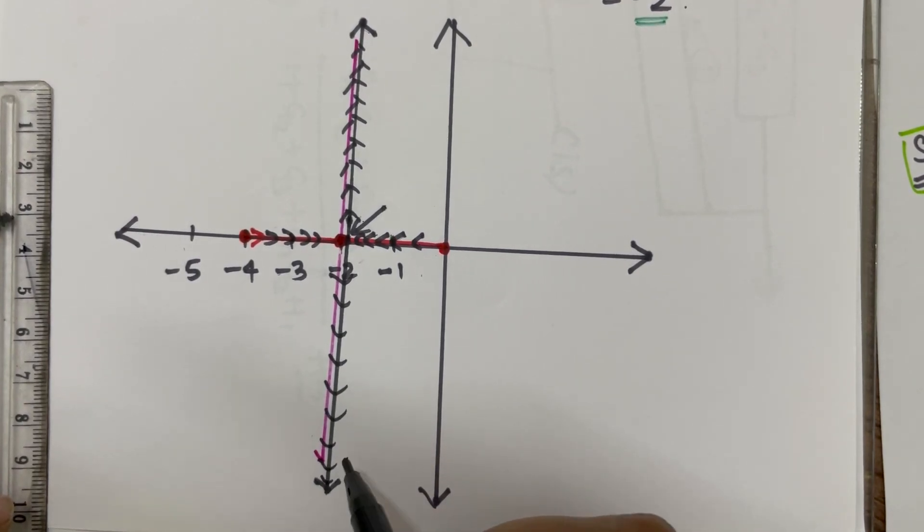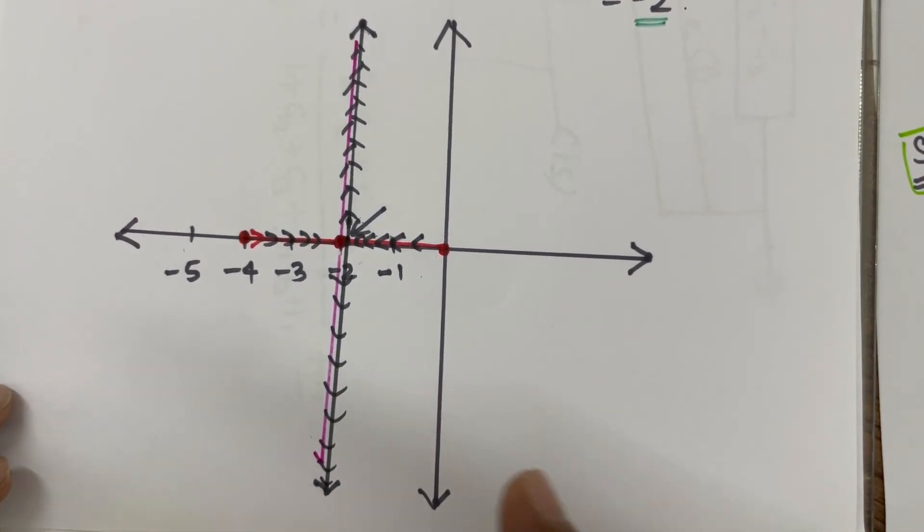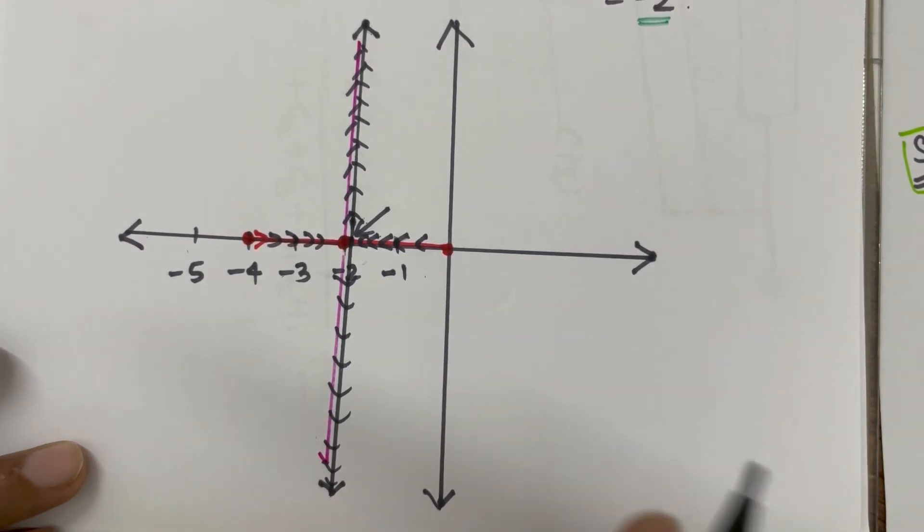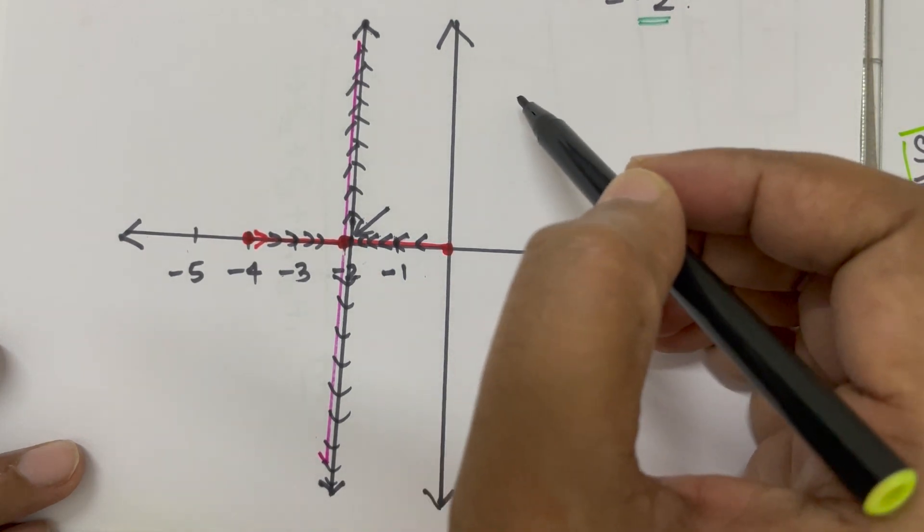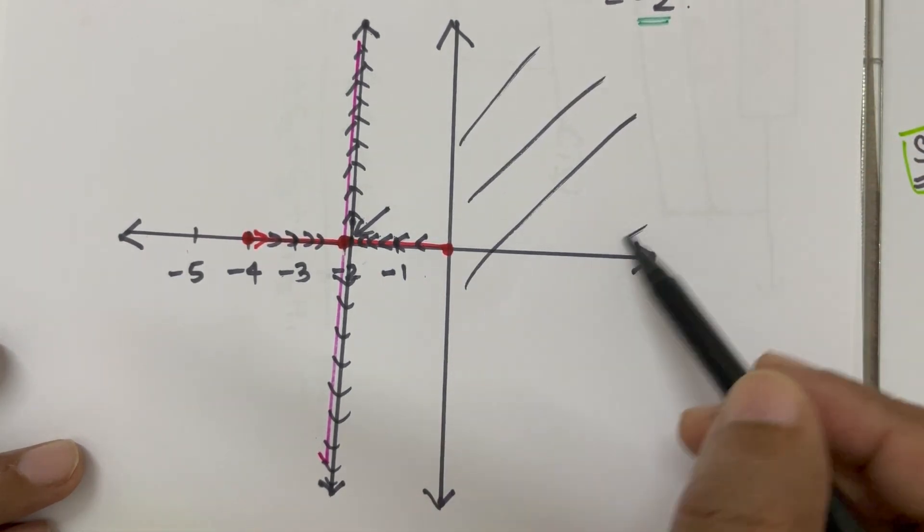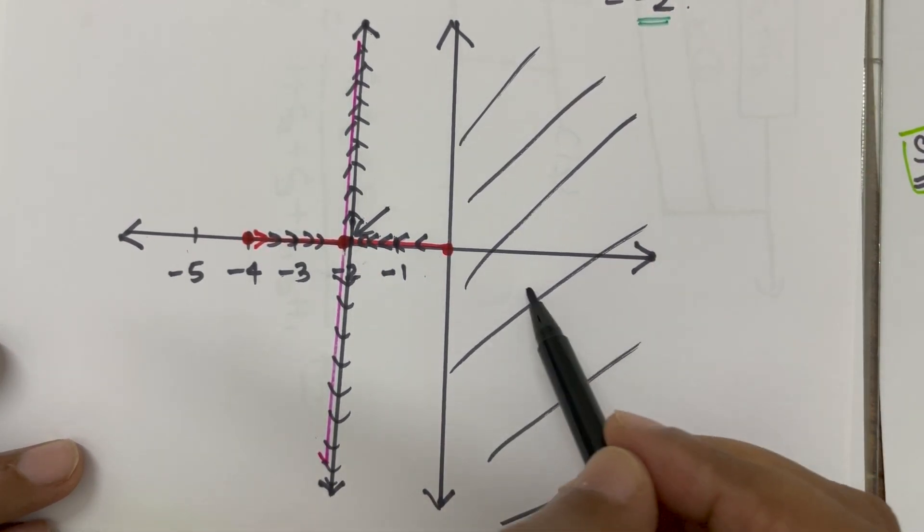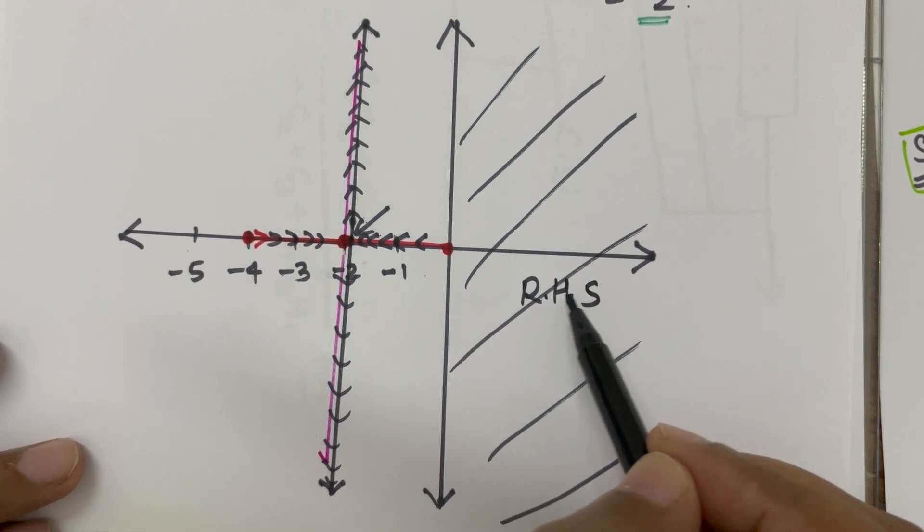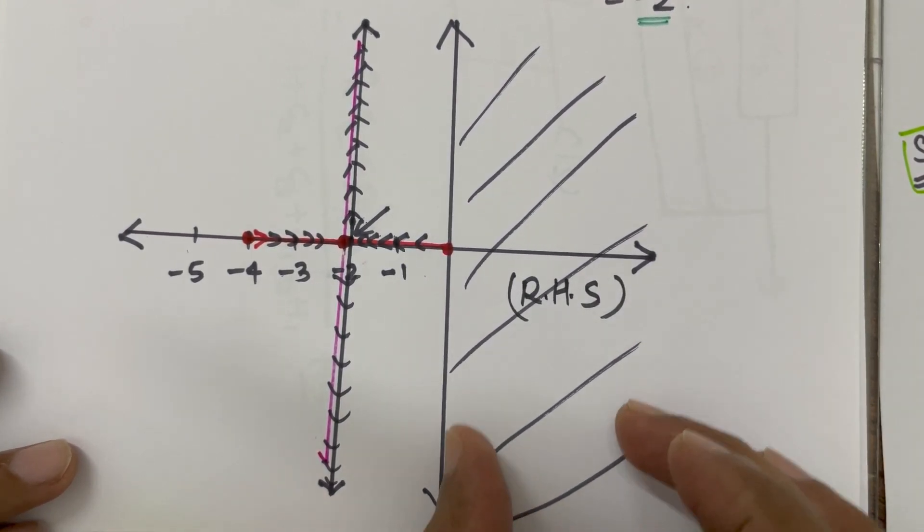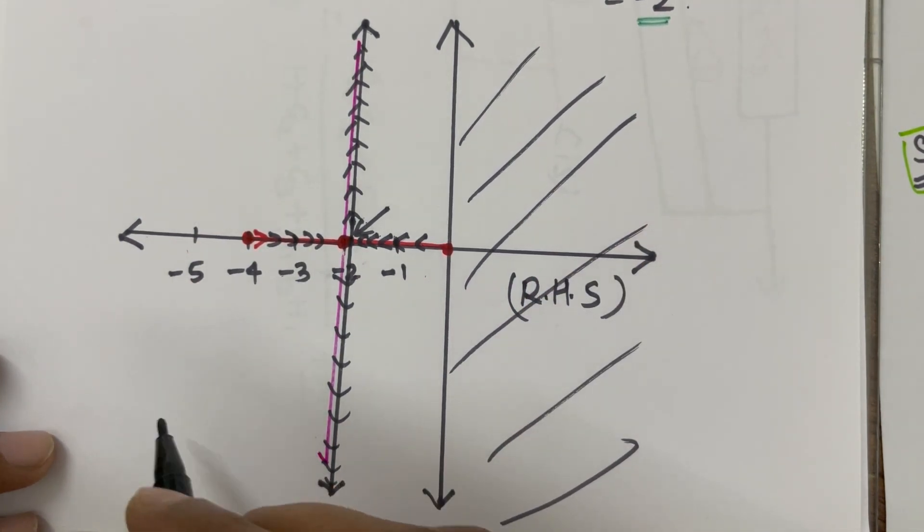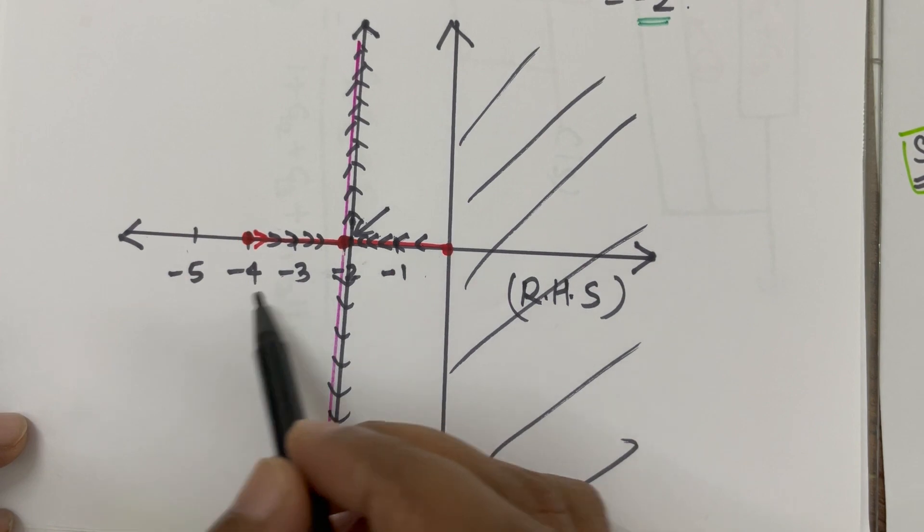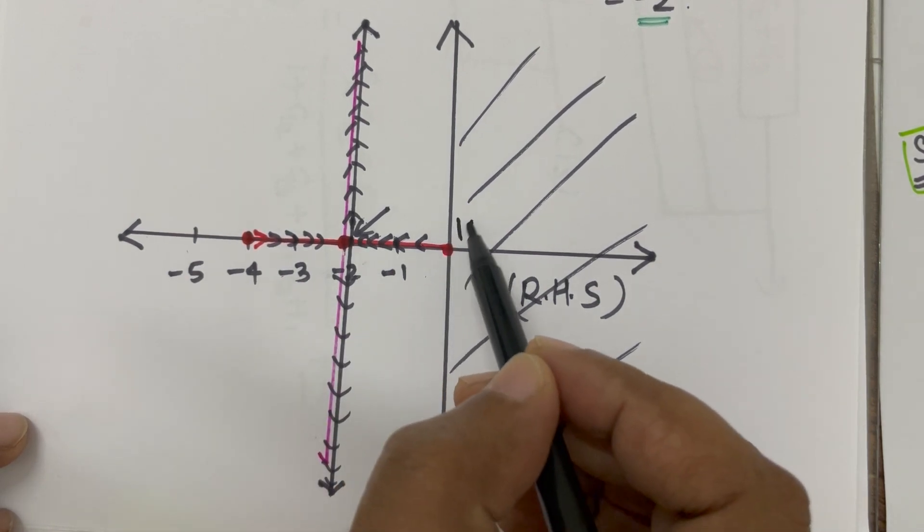So, this is our root locus. For very small example, what we can notice is, there is no possibility of having root in this region. This is the right hand side of the s-plane. There is no way any root will be there in the right hand side for this question. That means, it is unconditionally stable for all the values of K.